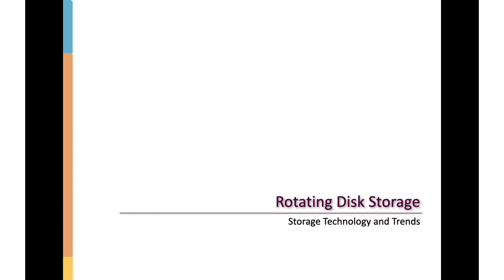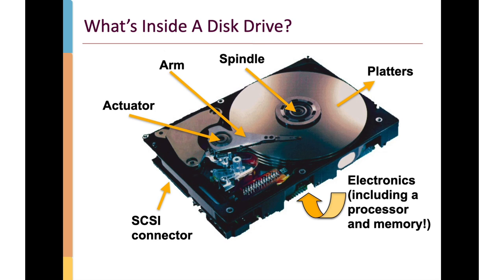Let's turn our attention to rotating disk storage, commonly referred to as hard drives. If you've ever opened a hard drive, you have some idea of what's inside. A typical hard drive contains disks that store information — in this particular drive, there are four disks stacked on top of each other, all connected to a central spindle. As the drive rotates, all four platters rotate simultaneously in the same direction at the same speed.